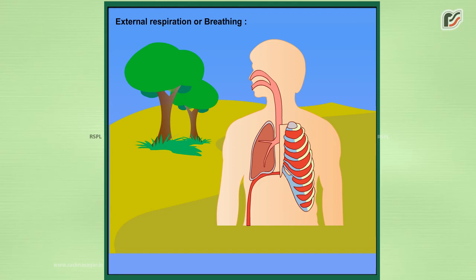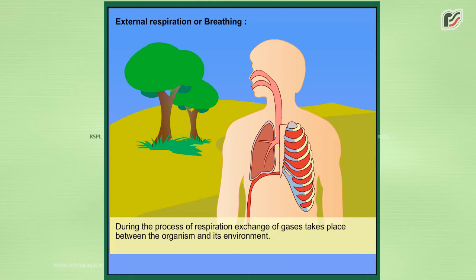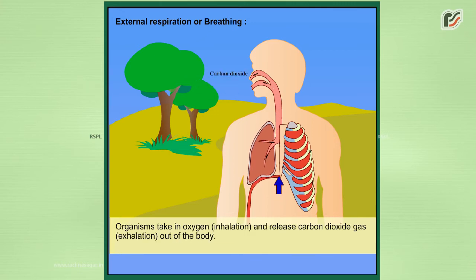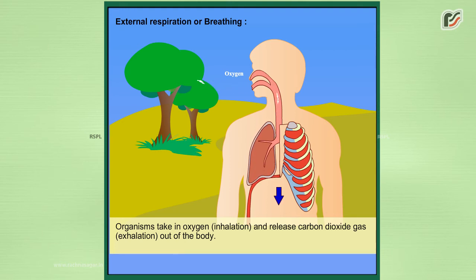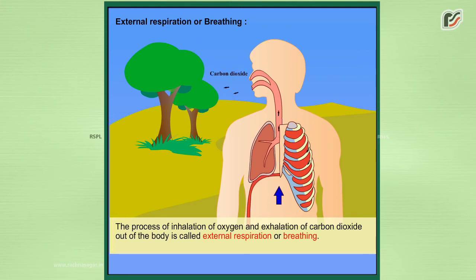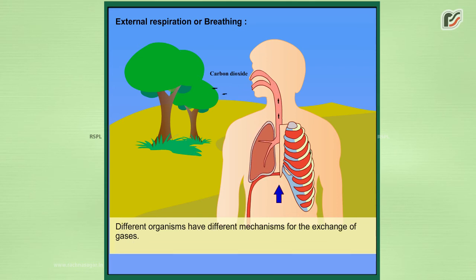External Respiration or Breathing. During the process of respiration, exchange of gases takes place between the organism and its environment. Organisms take in oxygen through inhalation and release carbon dioxide gas through exhalation. The process of inhalation of oxygen and exhalation of carbon dioxide out of the body is called external respiration or breathing. Different organisms have different mechanisms for the exchange of gases.